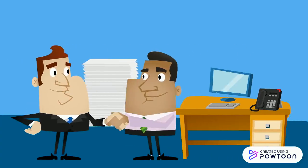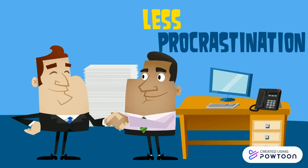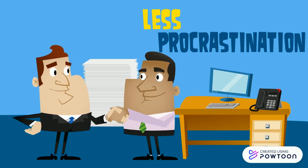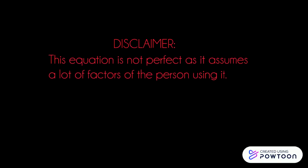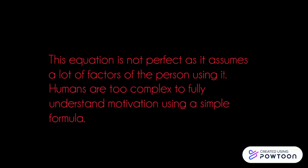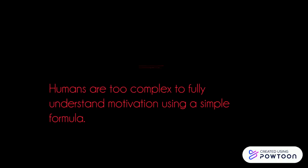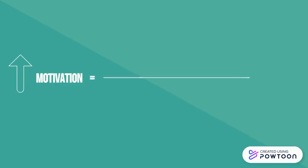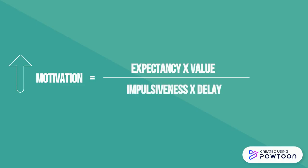If you can understand this formula and use it, you will be less likely to procrastinate. This equation is not perfect, as it assumes a lot of factors about the person using it. Humans are too complex to fully understand motivation using a simple formula. In theory, we can increase our motivation by maximizing the factors at the top of the equation and reducing the ones at the bottom.